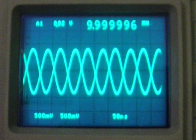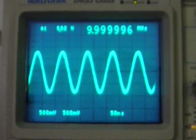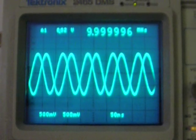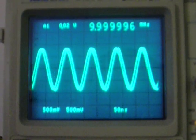You can see that the scope thinks it's just shy of 10 MHz, 4 Hz lower than 10 MHz. But the scope is what's wrong, not the Rubidium Standard.